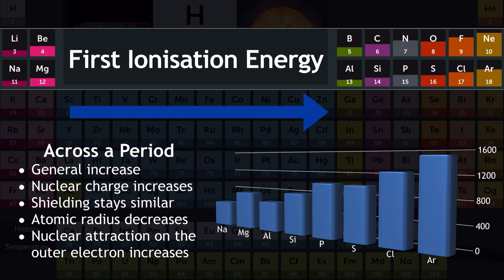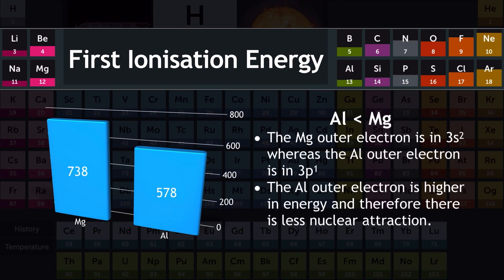There are two anomalies to discuss in detail. The first is that the first ionization energy of aluminium is actually lower than that of magnesium, against the general trend. This anomaly provides evidence of subshells. Magnesium's outer electron is in 3s2, whereas aluminium's outer electron is in 3p1. The aluminium outer electron is higher in energy as a result, so there is less nuclear attraction, requiring less energy to remove it.